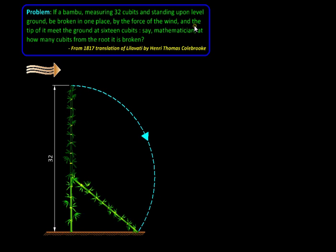Here it says the tip of it meets the ground at 16 cubits. So let us show that dimension here. The distance from the root of the bamboo to the tip resting on the ground is 16. Then we need to find the height at which this bamboo breaks. It is saying, say mathematician, at how many cubits from the root it is broken. So let us get down to solving it.